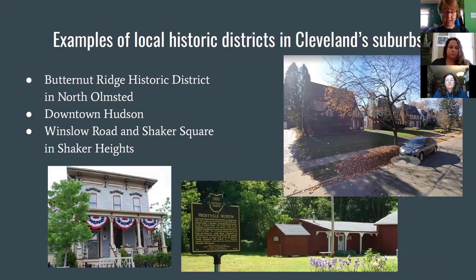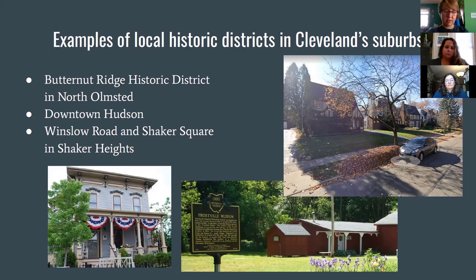That was some basic information about Cleveland's local historic districts. There are also designated local historic districts in Cleveland suburbs. A few examples are the Butternut Ridge Historic District in North Olmsted, downtown Hudson, and Shaker Heights, which has Winslow Road and Shaker Square. Each of these cities has its own different rules and different design review processes.